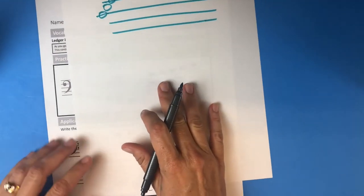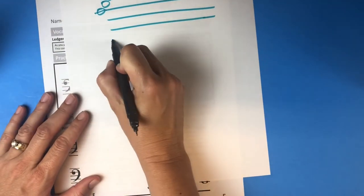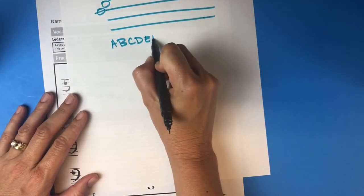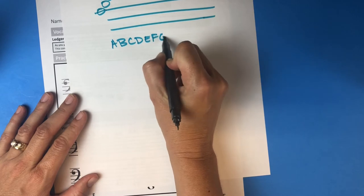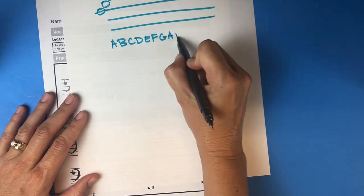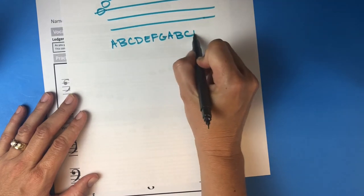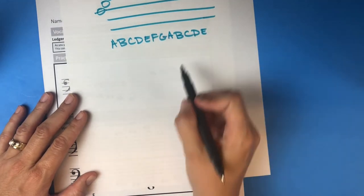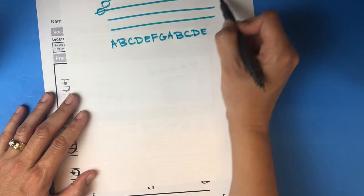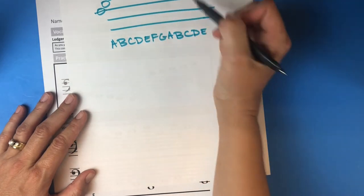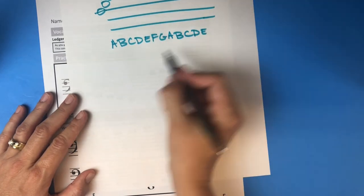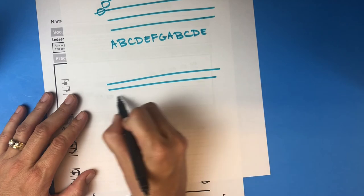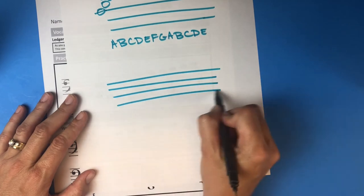As a reminder: A, B, C — the musical alphabet just repeats over and over. As you go up the staff it goes forward, so that's straightforward.